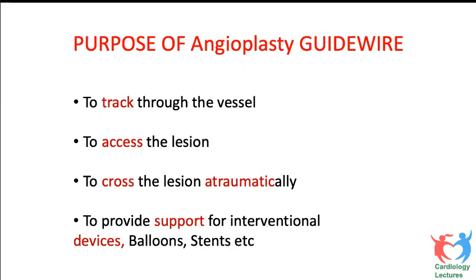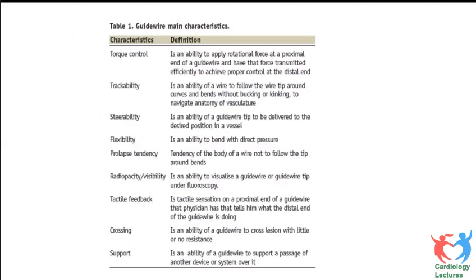To understand guidewires, we need to look at seven fundamental characteristics. No single wire will have all of them, so depending on vessel anatomy and lesion characteristics, we choose accordingly. The first characteristic is torque control — the amount of rotation given at the proximal end and how much rotation happens at the distal end. That's force transmission from proximal to distal.